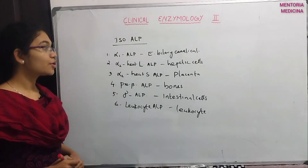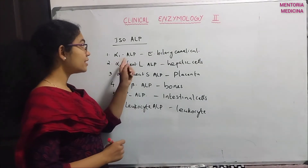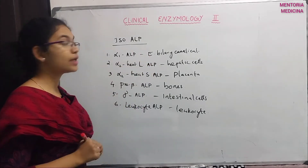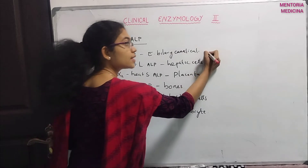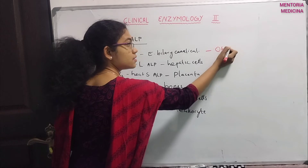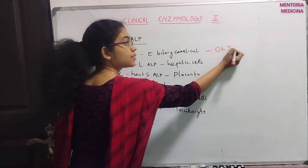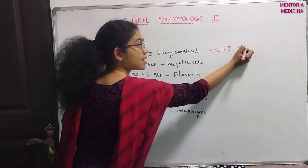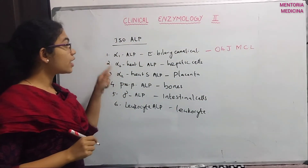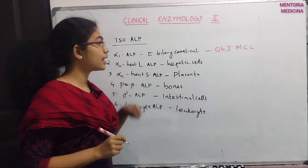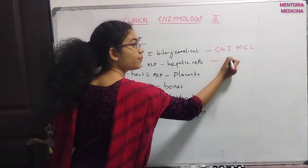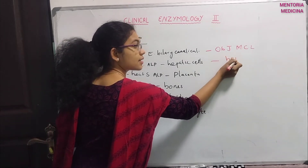Alpha-1 alkaline phosphatase is from the epithelium of bile canaliculi — so what is the disease? Obstructive jaundice, that's right. Also metastatic carcinoma of the liver. Alpha-2 heat labile alkaline phosphatase is elevated in hepatic cells, indicating hepatitis.